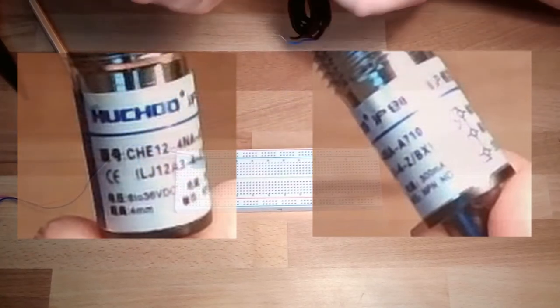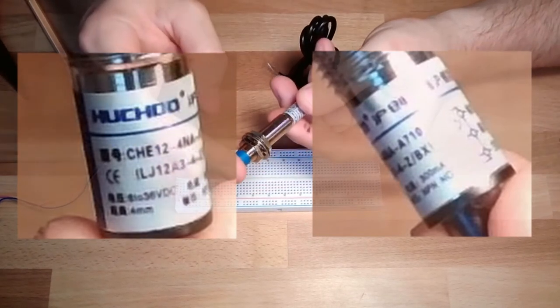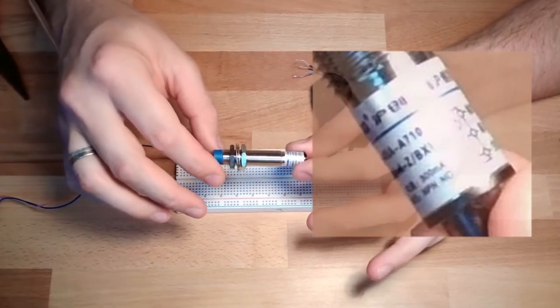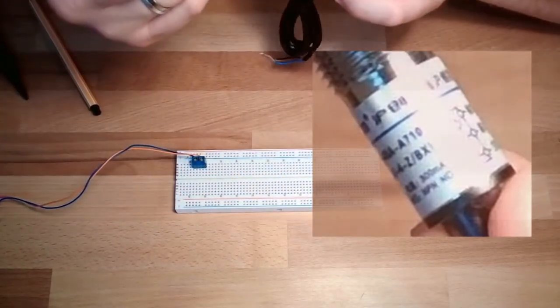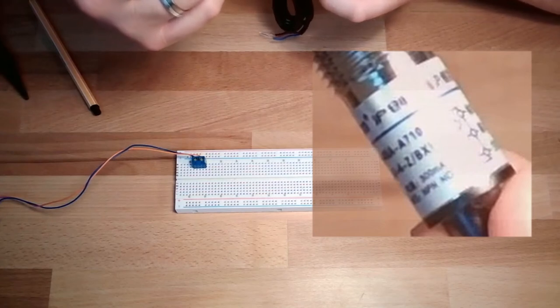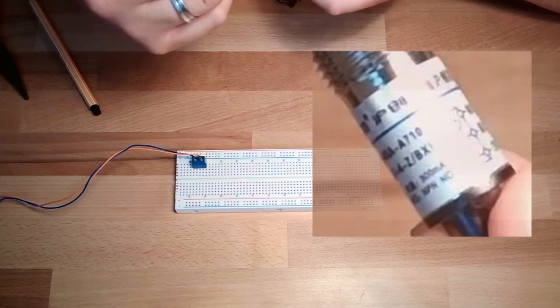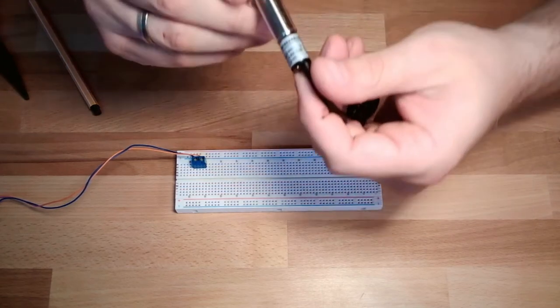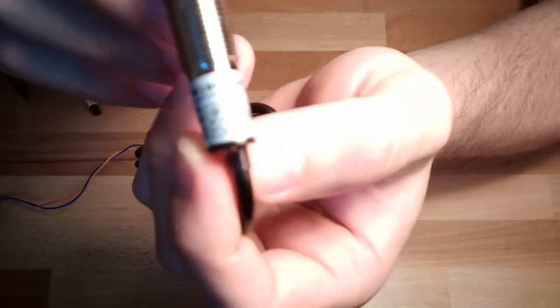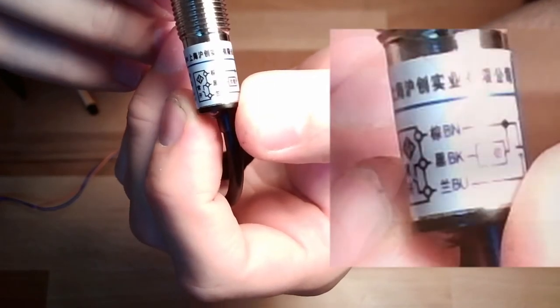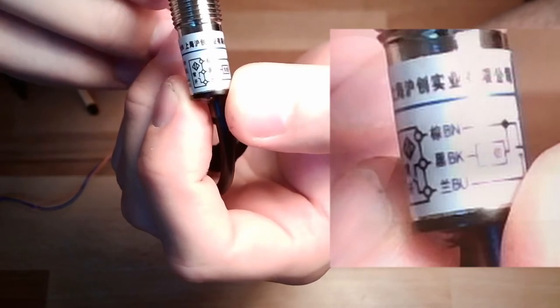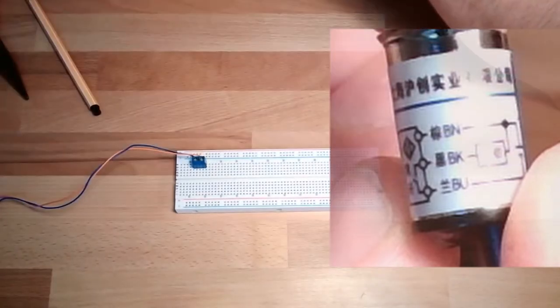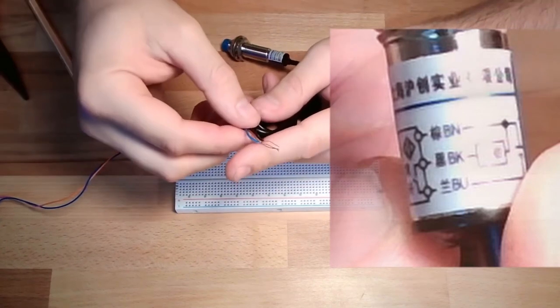Then there is written 4mm. That is the switching distance. Then it is written 300mA. So that is the maximum load, 300mA is the maximum load it can deliver. And NPN technology. And we do even have a small drawing how to connect it. That is very kind. With some labels: BN, BK, and BU.